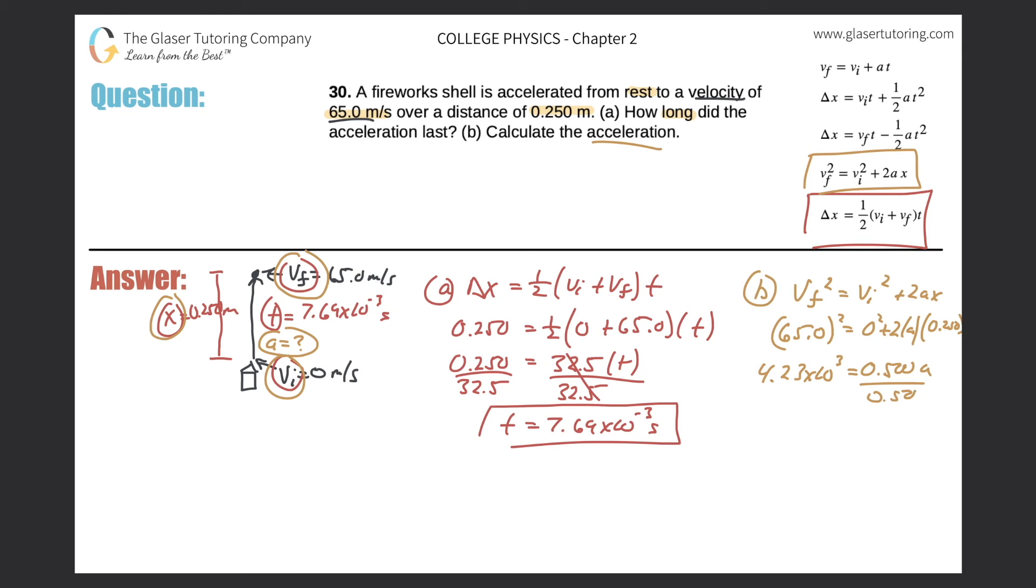So divide out the 0.500. So this should be fairly straightforward. So 4.23 essentially divided by five is just multiplied by two. So it'll simply be 8.46 times 10 to the third meters per second squared. And that would now be the acceleration.